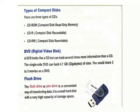Types of compact disk — we have 3 types of CD: CD-ROM (Compact Disk Read-Only Memory), CDR (Compact Disk Recordable), and CD-RW (Compact Disk Rewritable). DVD — Digital Video Disk. In a DVD, we can store 2 or 3 movies. Their size is 4.7 GB. A pen drive is a small hard disk with a very high capacity of storage space.